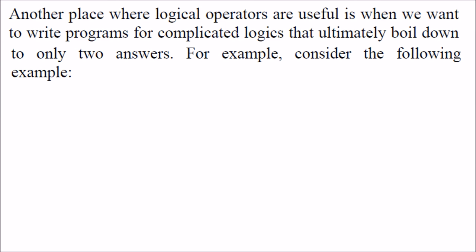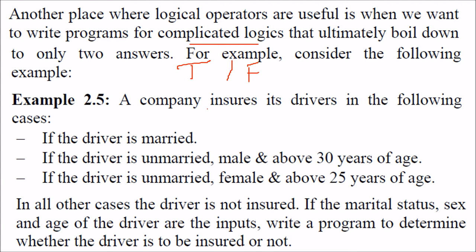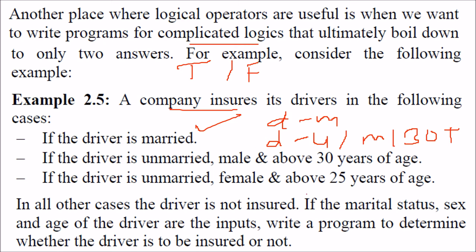There is another place where the logical operator can be very useful — we want to write programs for complicated logics, and we have two answers: true or false. If it boils down to true or false, we can employ the logical operators. For example, we have a question: your company insures its drivers in the following cases — driver is married, or driver is unmarried male and 30 plus, or driver is unmarried female and 25 plus. In all other cases, the driver will not be insured. The marital status, sex, and age have to be inputted through keyboard, and write a program to determine whether the driver is to be insured or not.